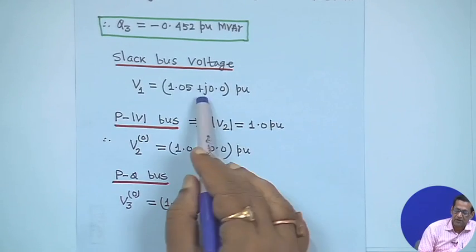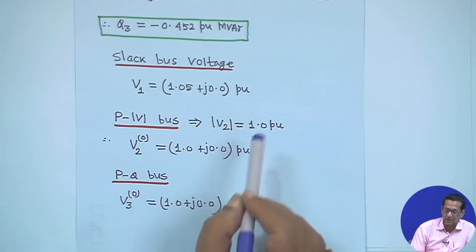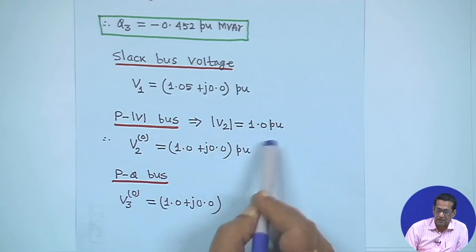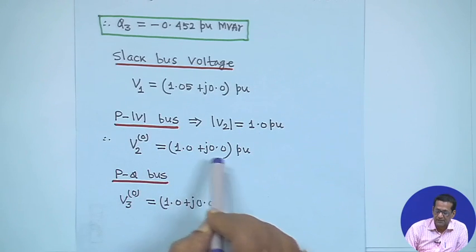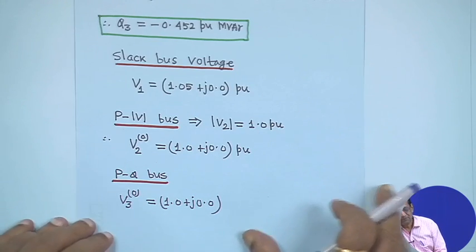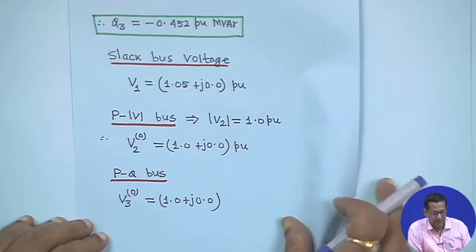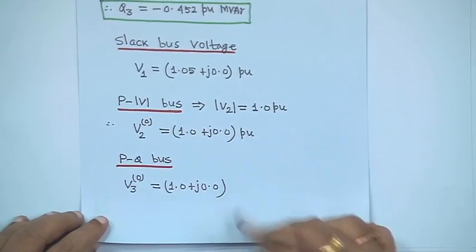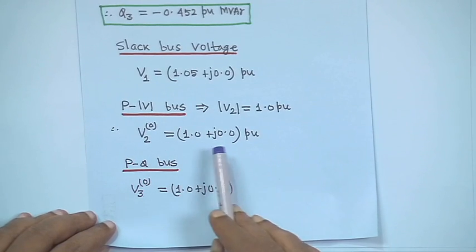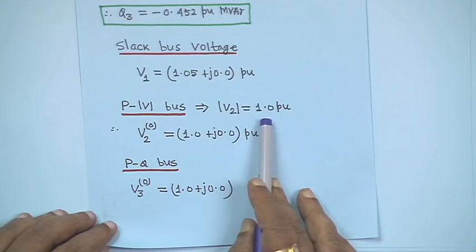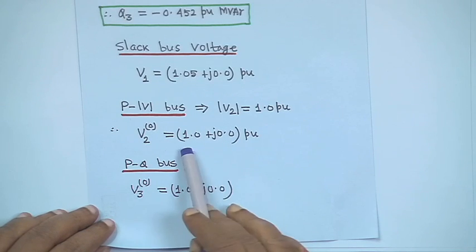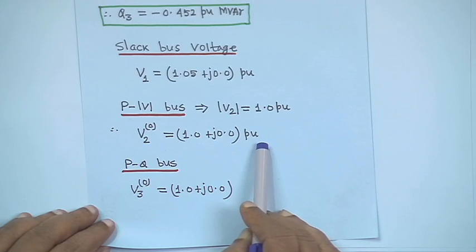Slack bus voltage is 1.05 + j0.0. For the PV bus, the magnitude V₂ equals 1.0. So the initial estimate is V₂⁰ = 1 + j0. In this iterative method, V₂⁰ is taken as 1 + j0, meaning the magnitude is 1 but the initial angle is 0. The magnitude will always remain constant — it is untouchable as it is specified.